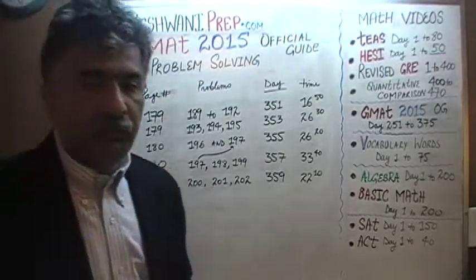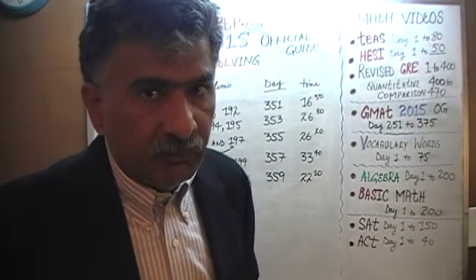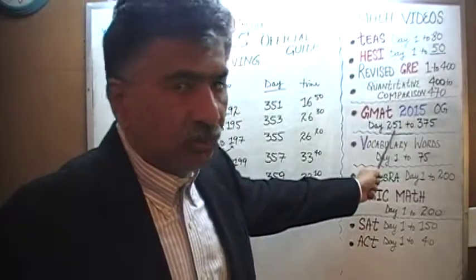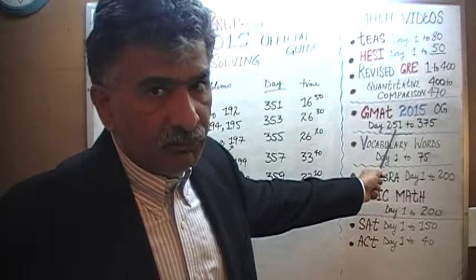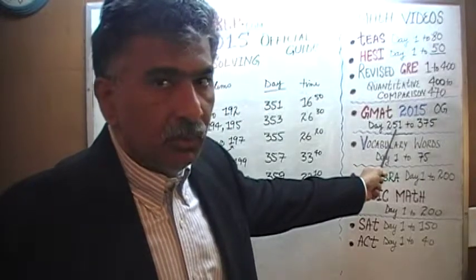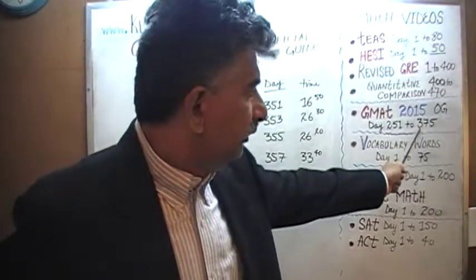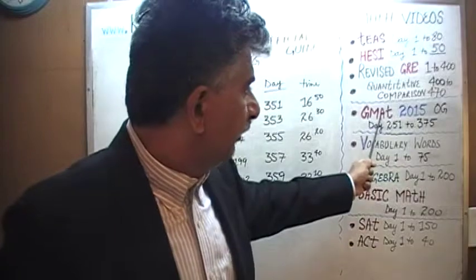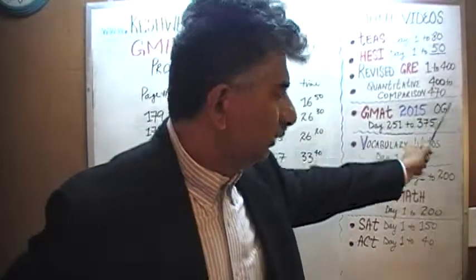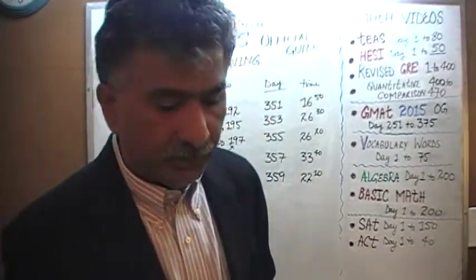As you can see, solutions to all the problem solving questions are presented on odd-numbered days. If you wish to watch the solutions to any of the data sufficiency questions, you will find the solutions to all the data sufficiency questions beginning with day number 252, all the way up to 375, for the GMAT 2015 official guide. Bye now.